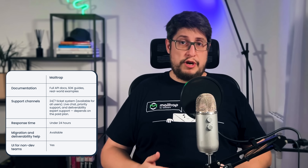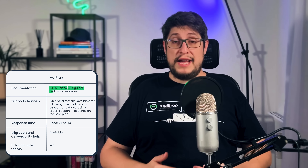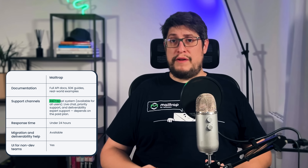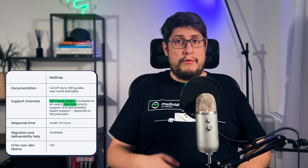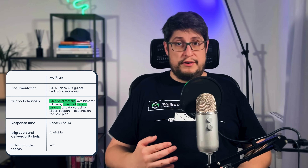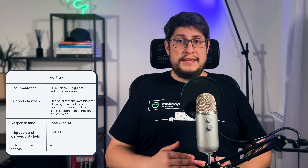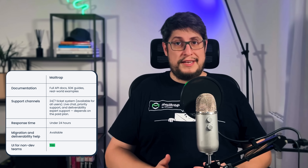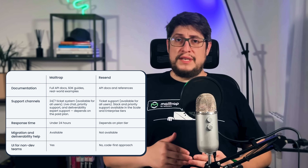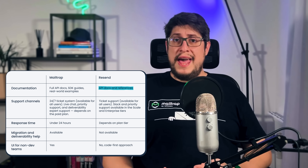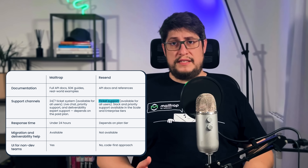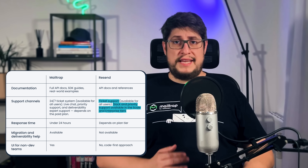Finally, let's compare support and developer experience, because good documentation and responsive support can make a big difference when things go wrong or when you need to move fast. MailTrap provides detailed developer-focused documentation, including API references, SDK guides, and real-world examples. Support includes 24/7 customer assistance via tickets, live chat support directly in the UI, and priority support on higher tiers. Large senders also get free deliverability expert support and onboarding assistance. Resend offers a clean developer experience with simple API design and good reference documentation. Support is ticket-based, with Slack and priority support available in the scale and enterprise tiers.